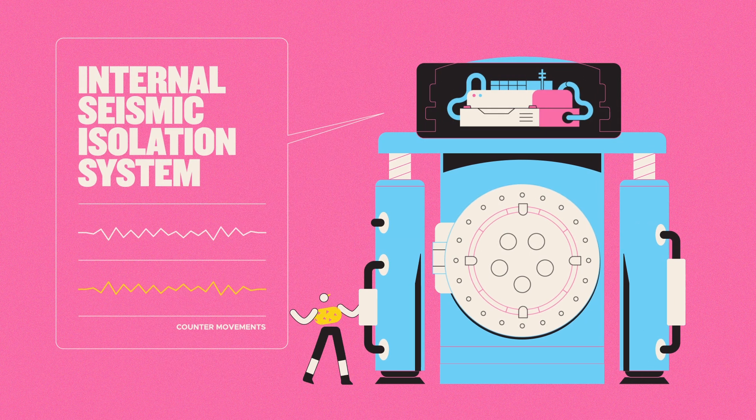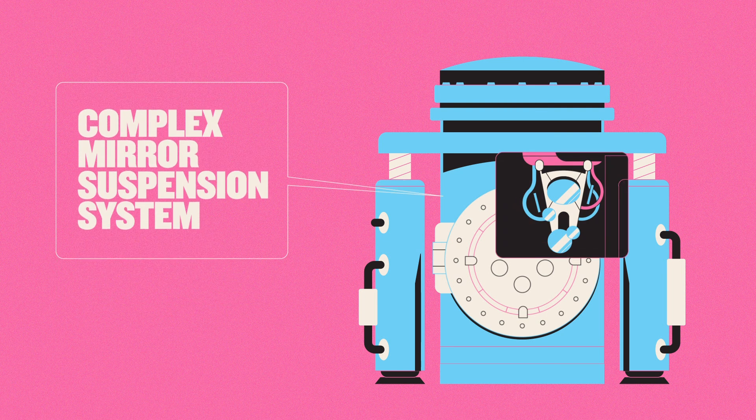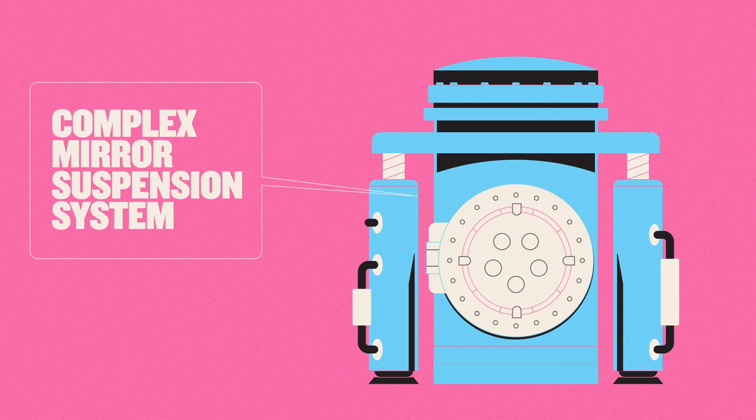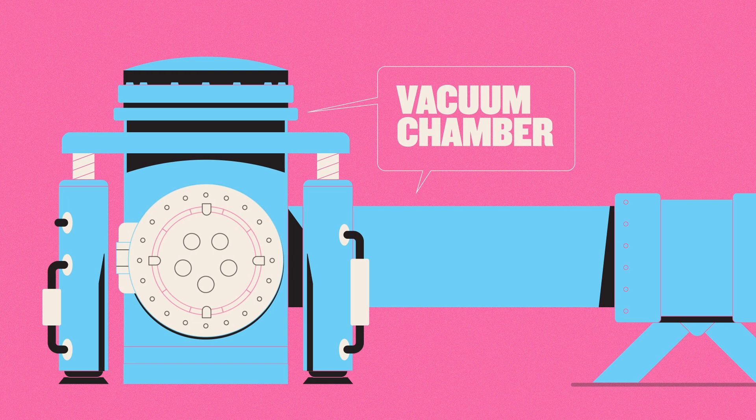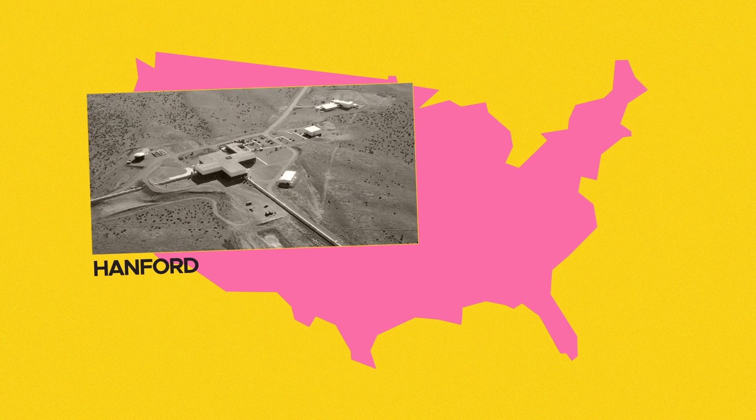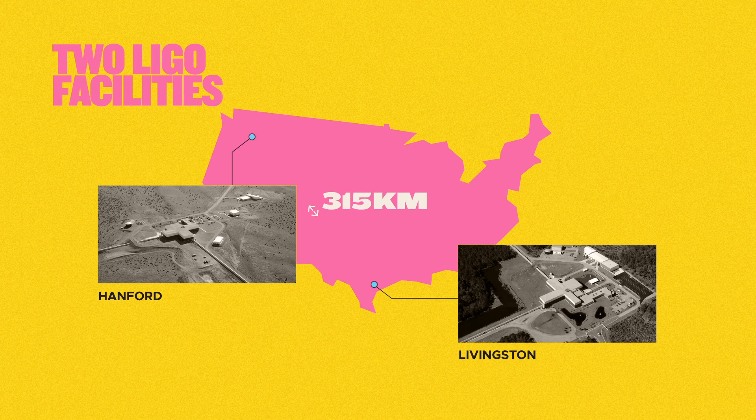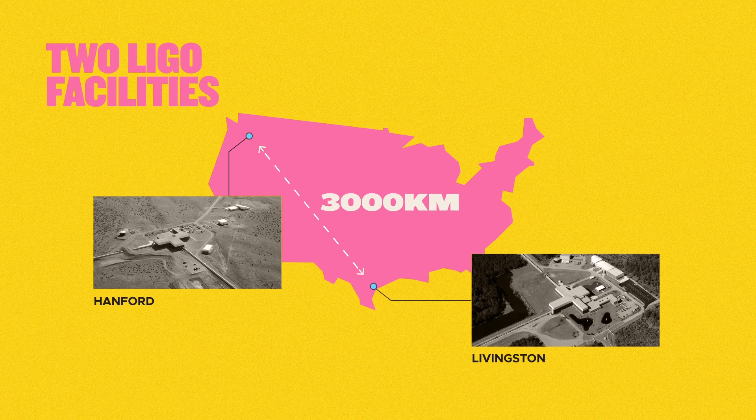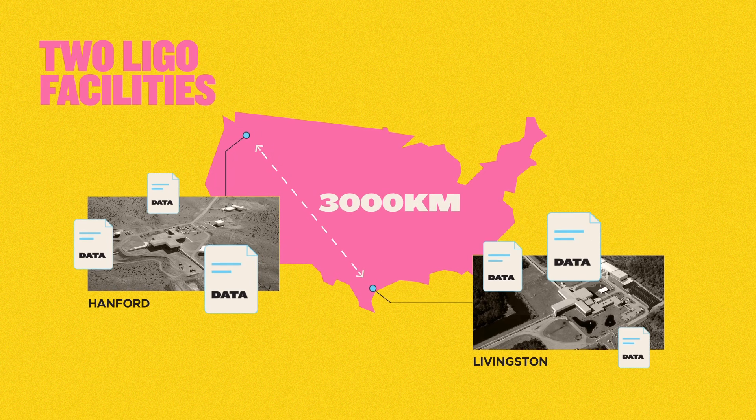As such, LIGO is equipped with an astonishingly complex series of damping systems to isolate it from outside vibrations. These include an internal seismic isolation system, which senses and then counteracts ground movements, a complex mirror suspension system, and one of the largest and purest sustained vacuums on Earth. And if all of that wasn't enough, they built two of them, three thousand kilometers apart, in order to be able to compare two isolated sets of data.